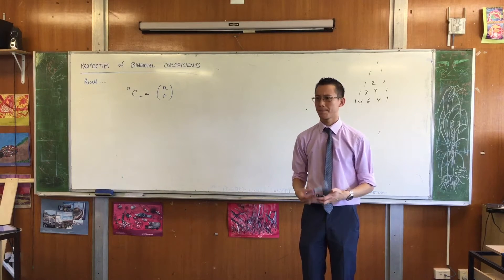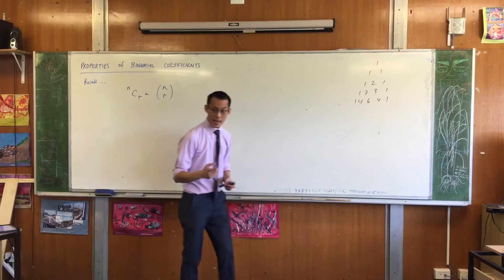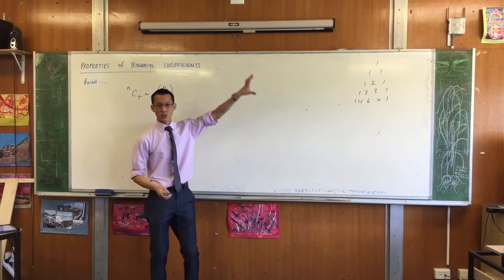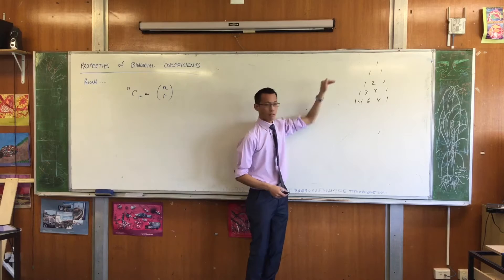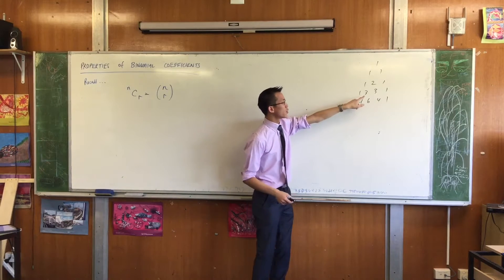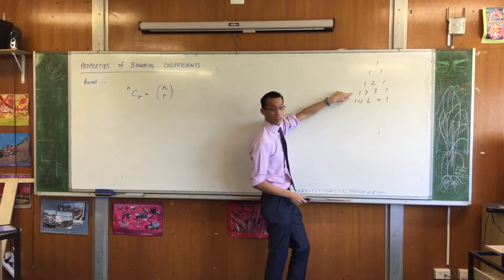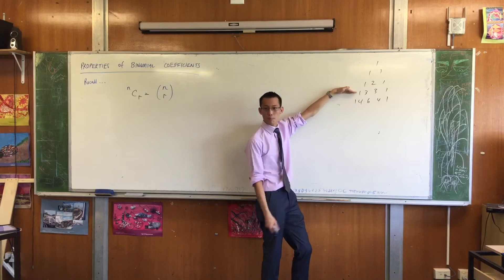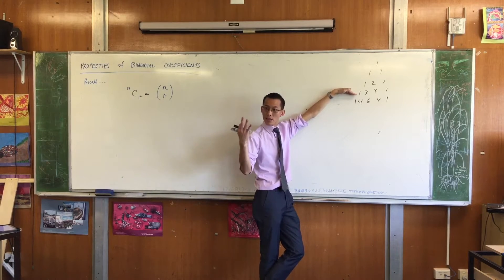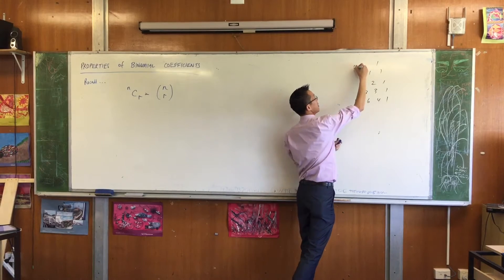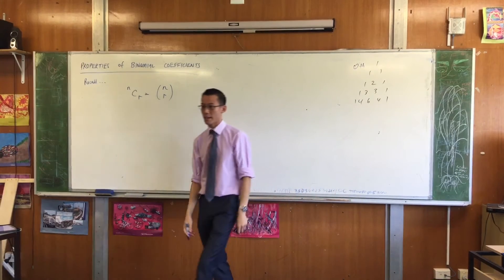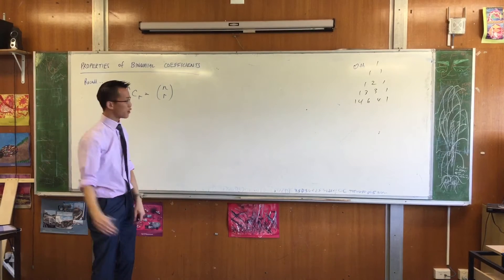The N refers to, on Pascal's triangle, which row am I on, right? So for example, if I wanted to talk about a number here, what row is this that I'm putting my hand on right now? That's the third row, remembering that there is a zeroth row up there, and then it goes first row, second row, third row.